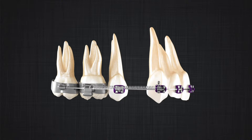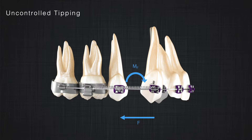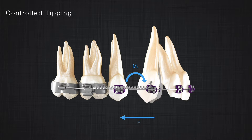What happens if we retract the canine on a round or rectangular wire? At the start, the force applied to the canine is farther from the center of resistance, therefore it produces a moment — the moment of the force — shown here by the blue arrow. This has a tendency to produce uncontrolled tipping. However, because the bracket is sliding on the wire, very soon the wire will start to touch the corner of the bracket, and now a couple will start to appear in the system, because the wire doesn't want to bend and therefore applies force on the corner of the bracket. At the start, this couple is small.